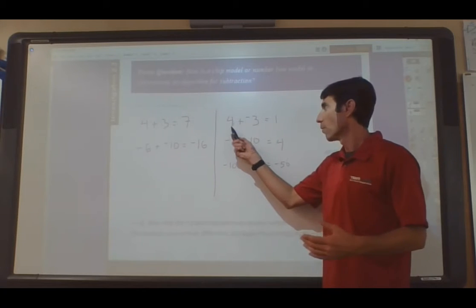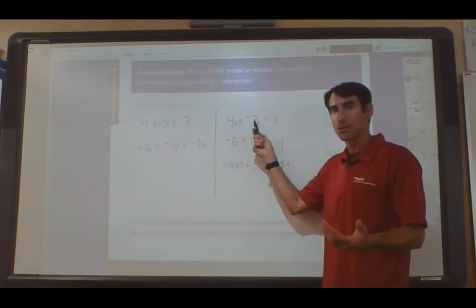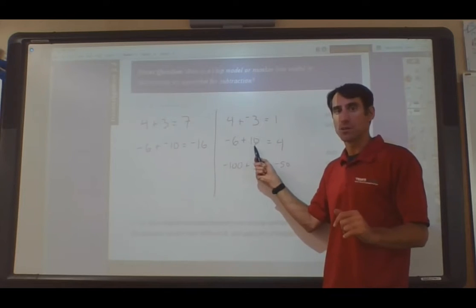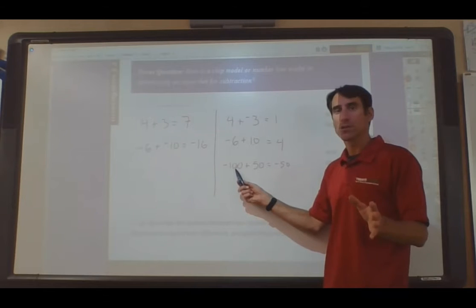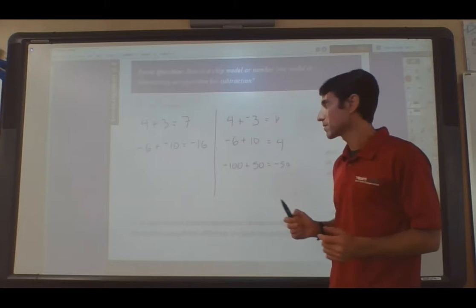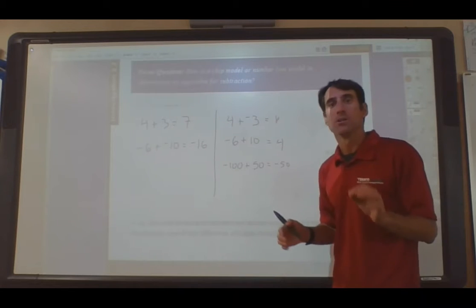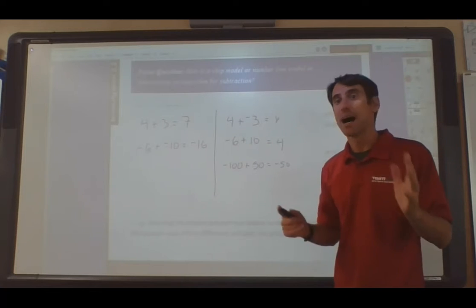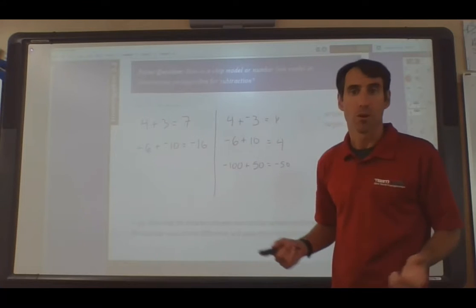Well, 4 has a larger absolute value than negative 3. Negative 6 has a smaller absolute value than 10. And negative 100 has a larger absolute value than 50. Therefore, the signs follow that as well. So, we found two algorithms for addition. We also discovered that when you add opposites, you get zero.